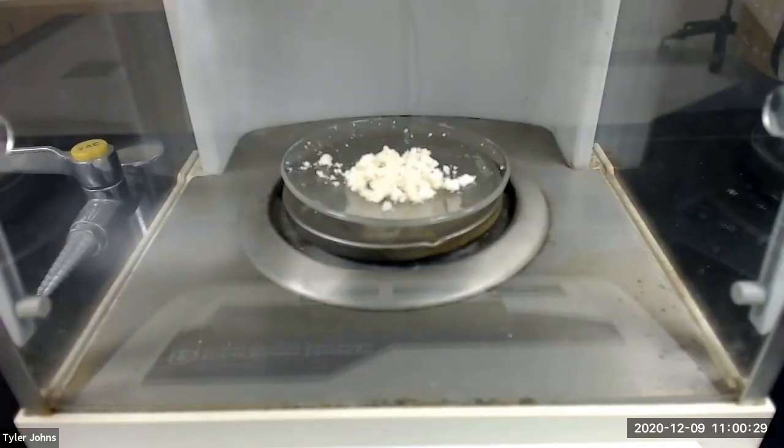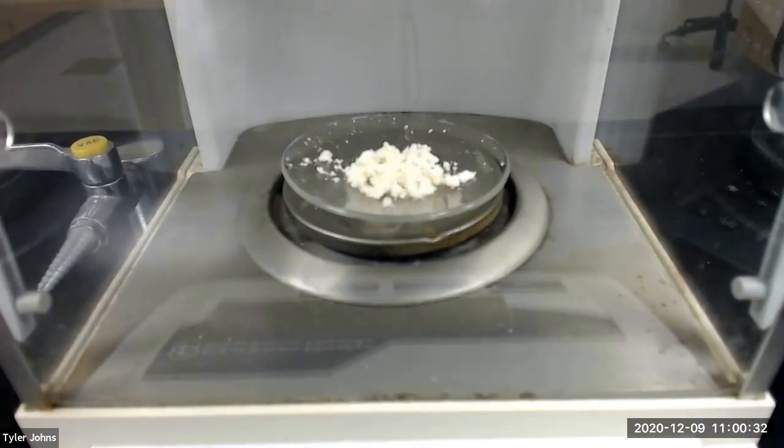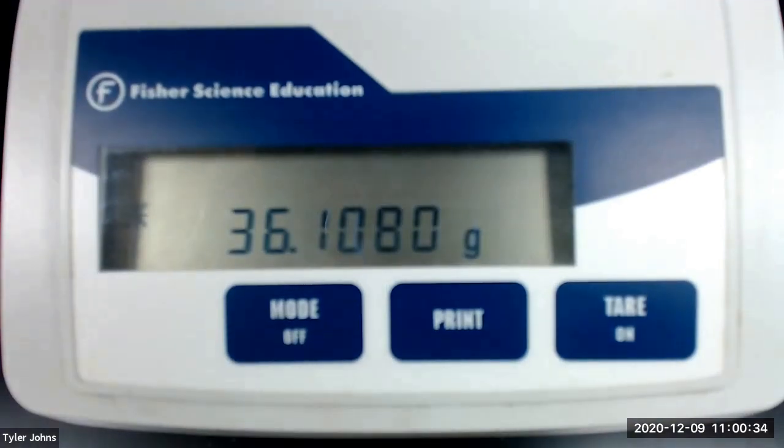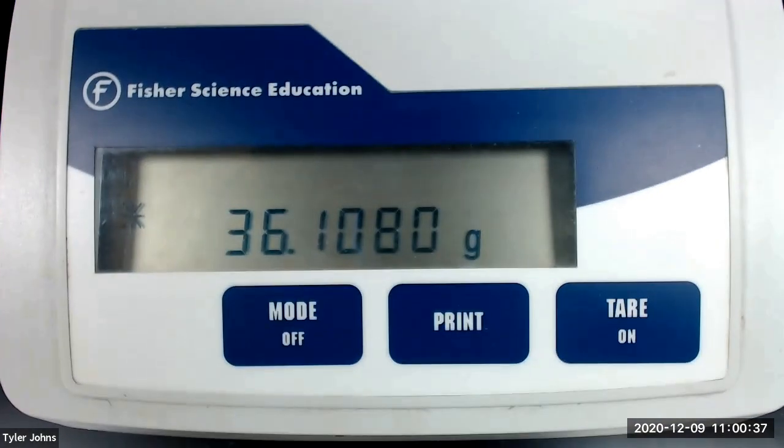The mass of the pre-weighed watch glass and the crude benzoin is 36.1080 grams.